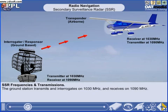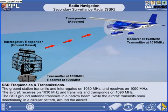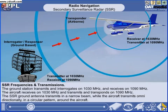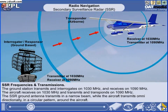The ground station transmits and interrogates on 1,030 MHz and receives on 1,090 MHz. The aircraft receives on 1,030 MHz and transmits on 1,090 MHz. The SSR ground antenna transmits in a narrow beam, while the aircraft transmits omnidirectionally in a circular pattern around the aircraft.